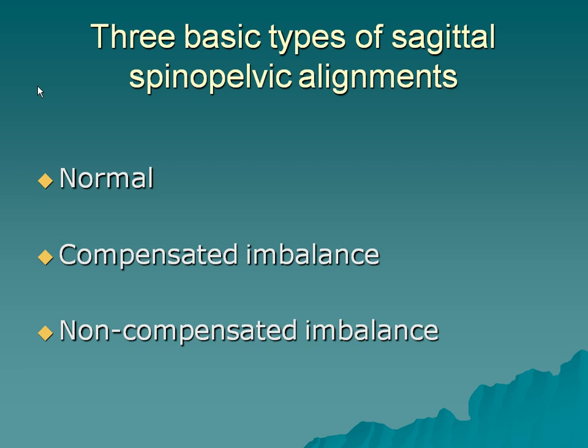Compensated imbalance is the typical patient presentation. Then there's non-compensated imbalance — that's the one like the lady you saw in the picture. That one is very easy; you don't have to be Einstein to understand that she's in sagittal imbalance. But for compensated imbalance, you have to be close to Einstein — you have to learn how to identify this patient.